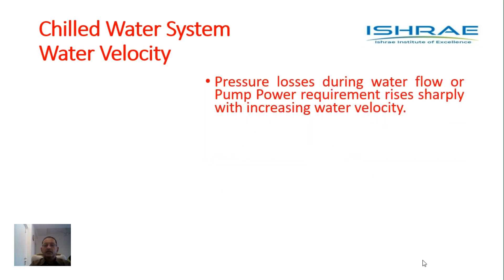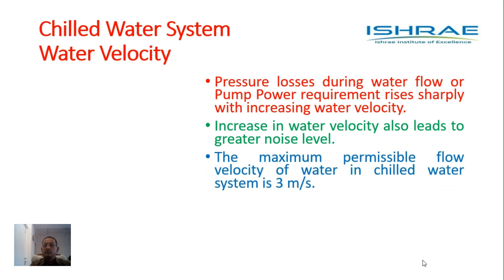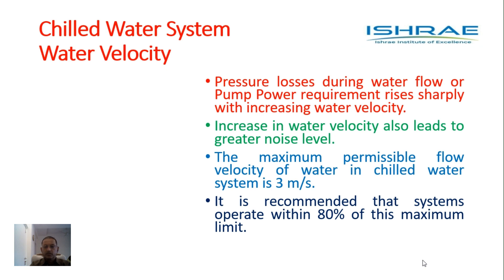Pressure losses during water flow, or pump power requirement, rises sharply with increasing velocity. The higher the velocity of water, the more will be the pump losses — that is, pressure losses — and more will be noise. Increase in water velocity also leads to greater noise levels. The maximum permissible flow velocity, because of these reasons, in a chilled water system is 3 meters per second. It is also recommended that systems operate within 80% of this maximum limit, so normally the velocity of chilled water through pipes is kept around 2.4 meters per second or below.